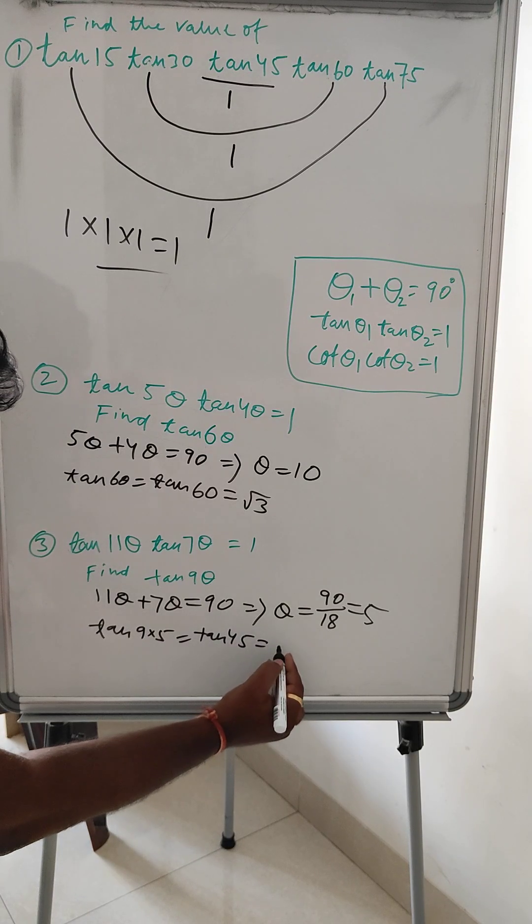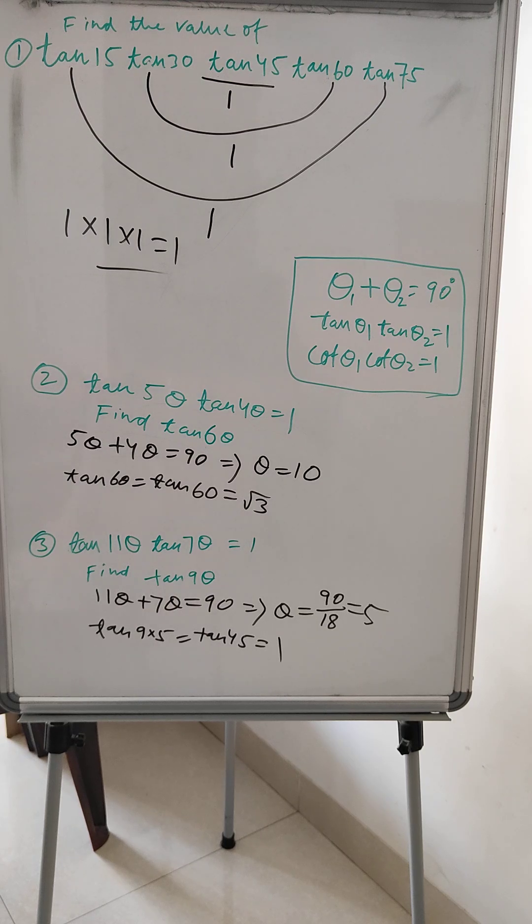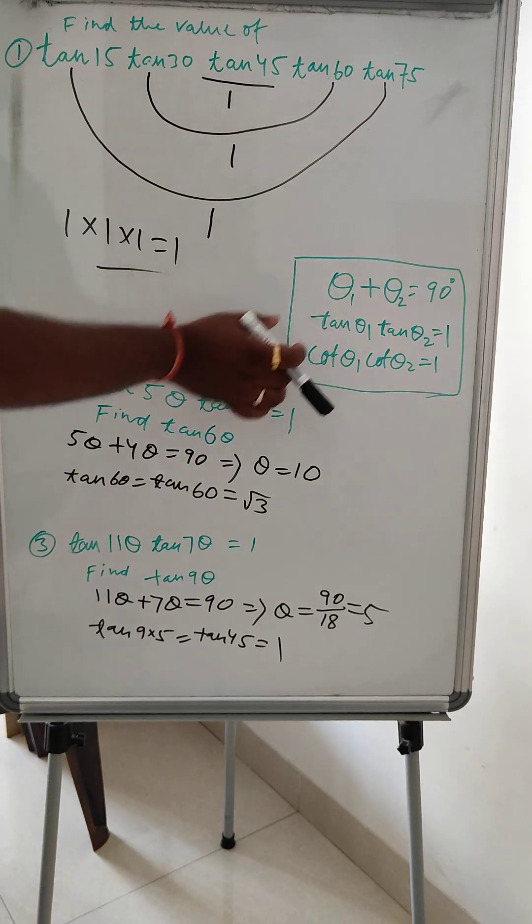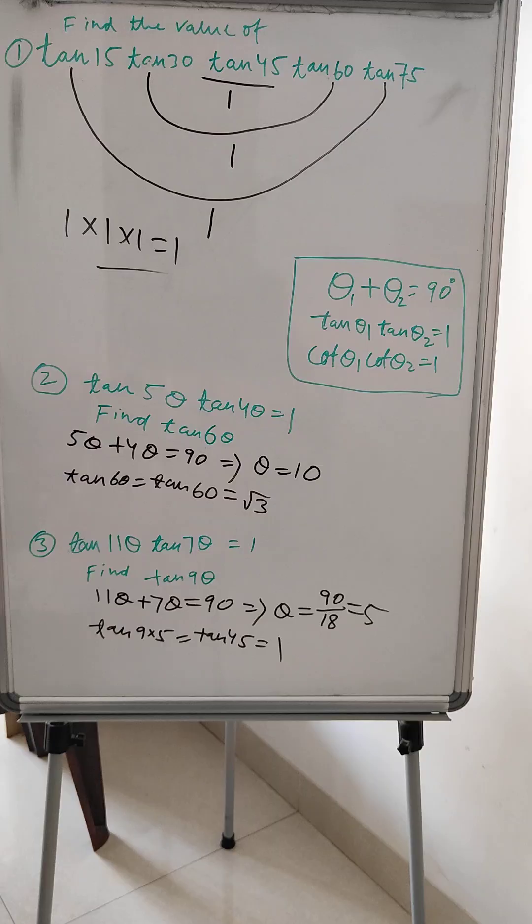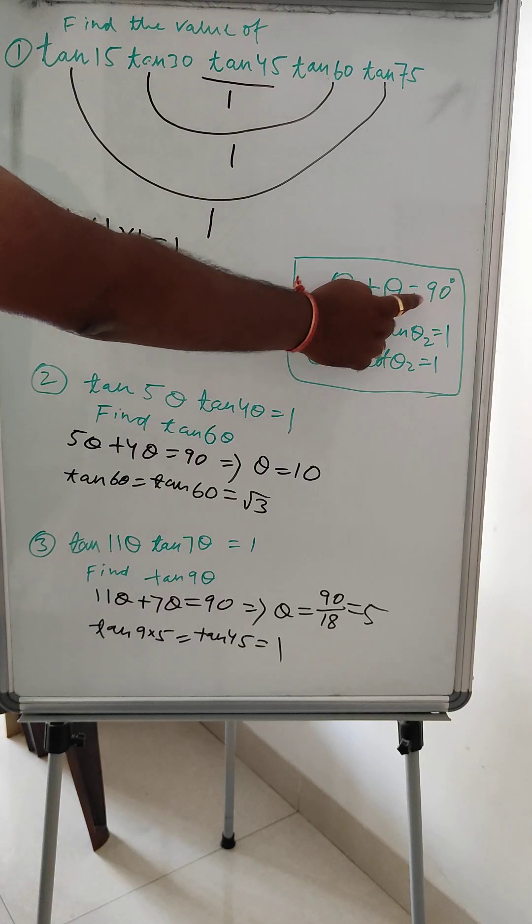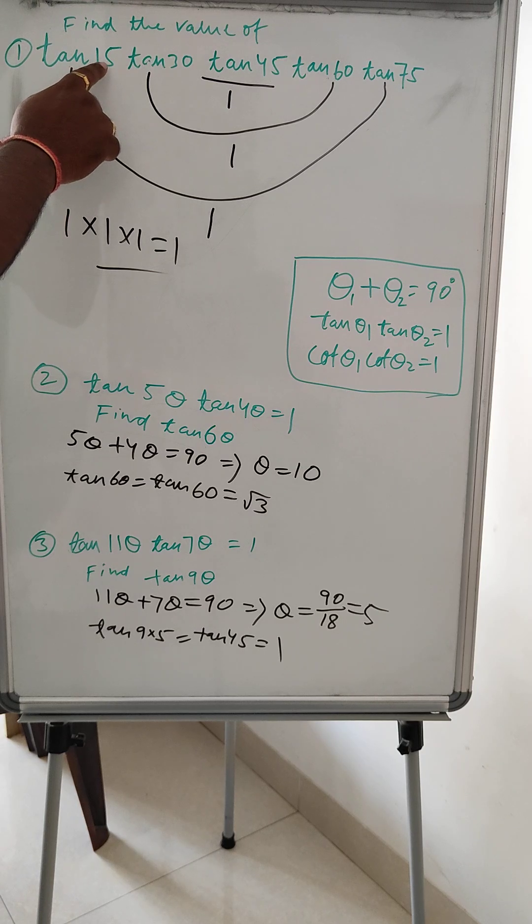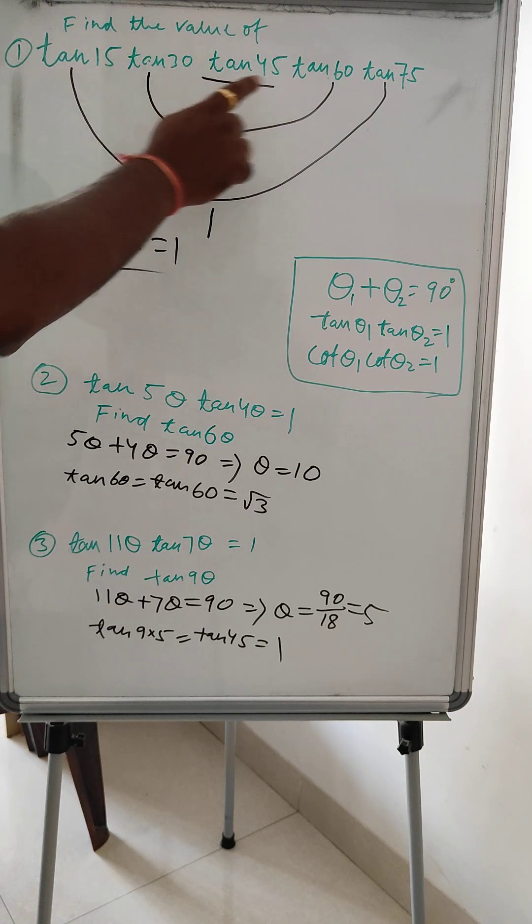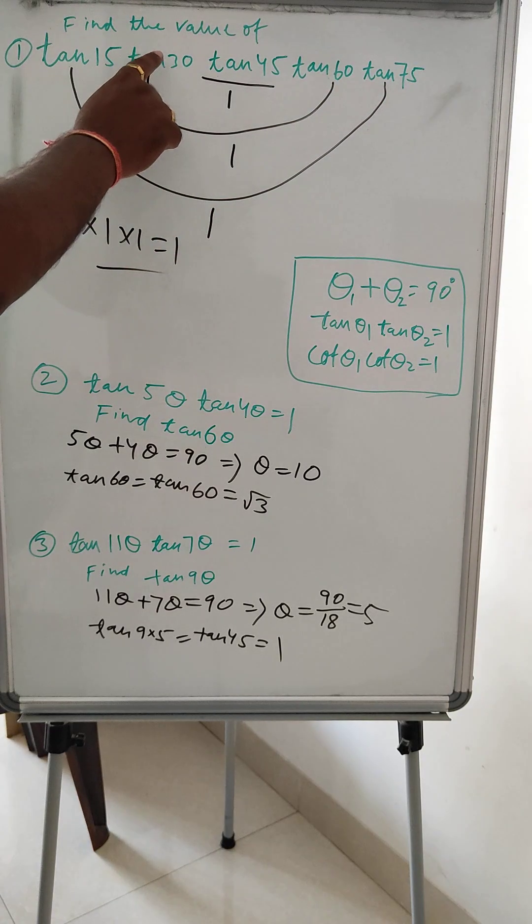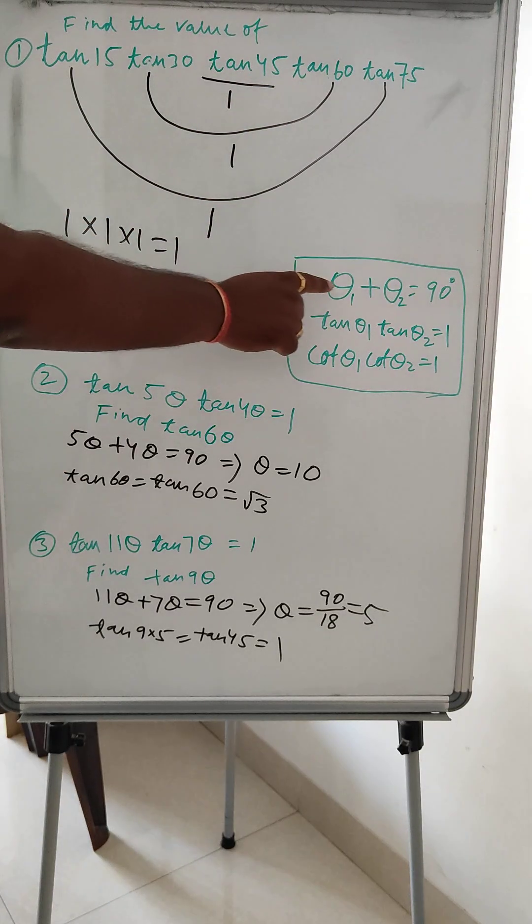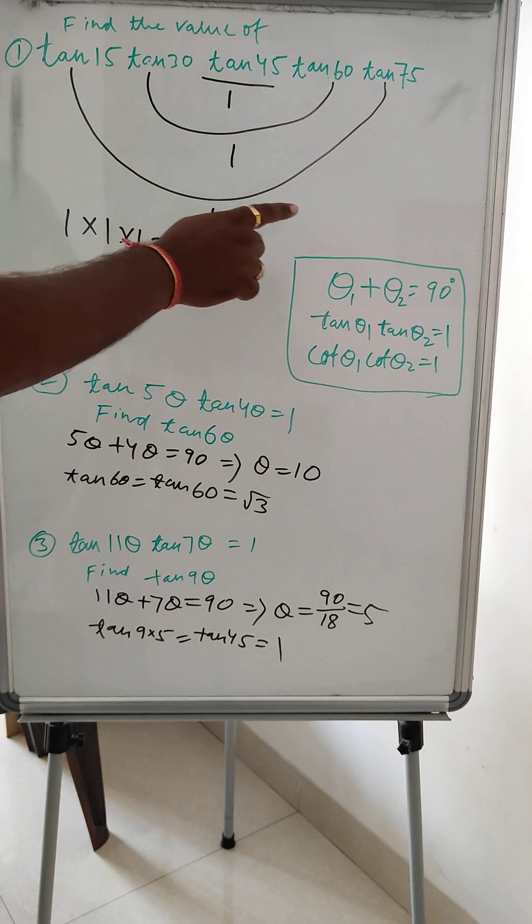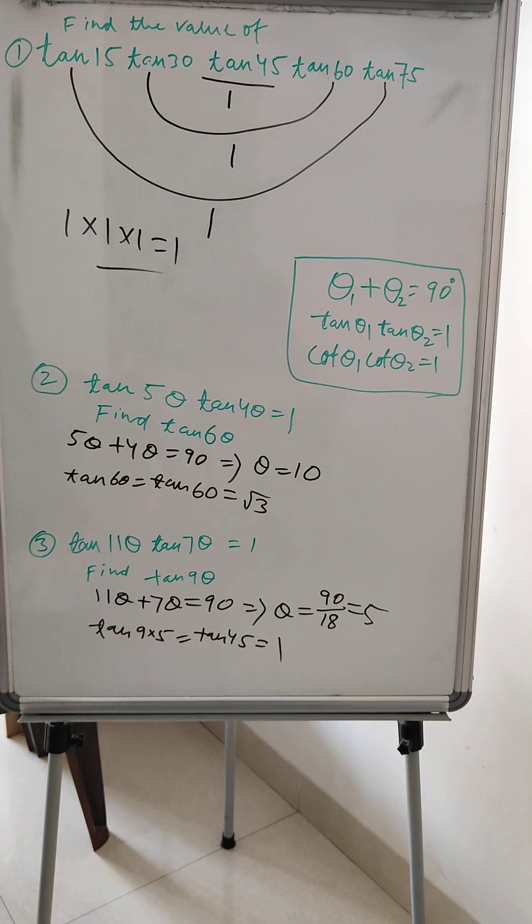So the main trick is: these questions come in competitive exams, so you have to put the answer directly. For that, you should know the trick. The trick here is: θ1 + θ2 = 90°, so in that case tan θ1 × tan θ2 = 1. Here, 15 plus 75 is 90, so tan 15° × tan 75° will always be 1, and tan 30° × tan 60° will always be 1. Thank you for watching. Please like and subscribe.